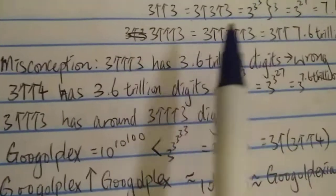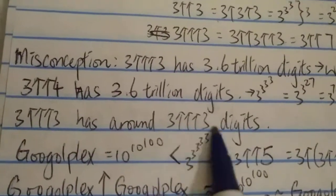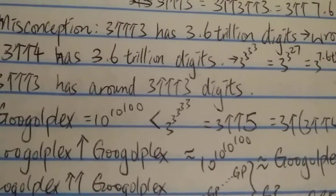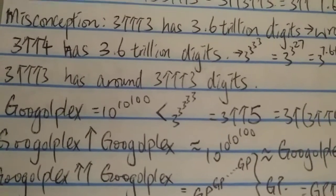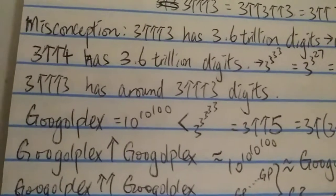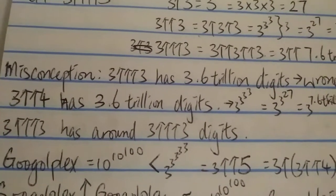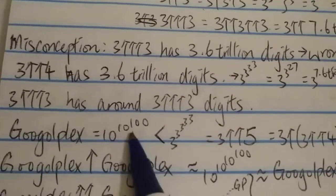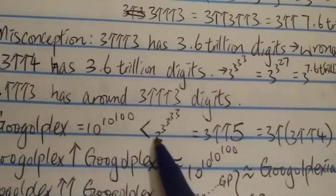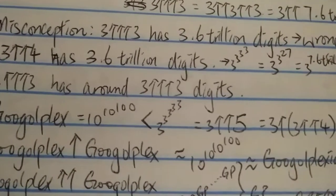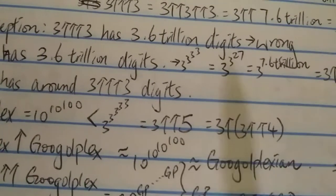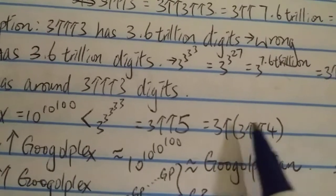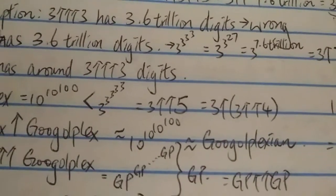3 ↑↑↑ 3 actually has around 3 ↑↑↑ 3 number of digits — roughly the same size — because it's way too big. And clearly, Googolplex is way smaller than even 3 ↑↑↑ 3. Googolplex — 10 to the 10 to the 100 — is actually smaller than a power tower of 3 that is just 5 levels high, which equals 3 ↑↑ 5, or 3 raised to that 3.6-trillion-digit number.